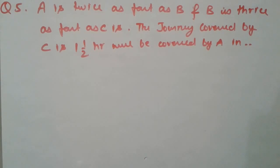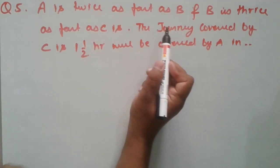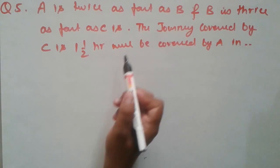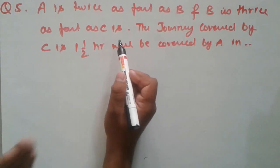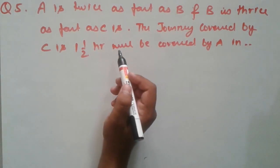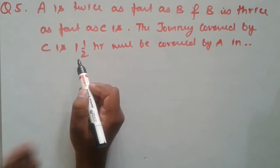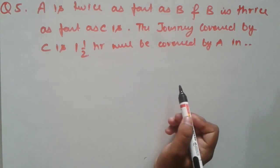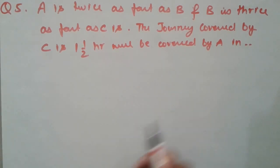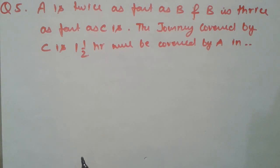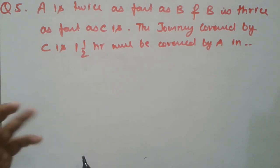Here is the fifth and last question. A is twice as fast as B, and B is thrice as fast as C. The journey covered by C in one and a half hours will be covered by A in how much time? We have to calculate how much time A will cover the same distance that C covers in one and a half hours.